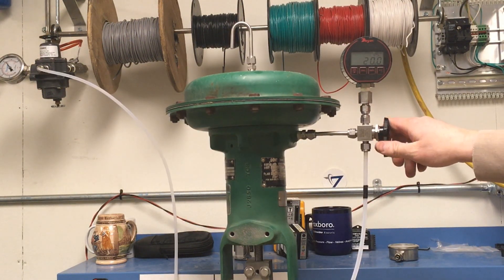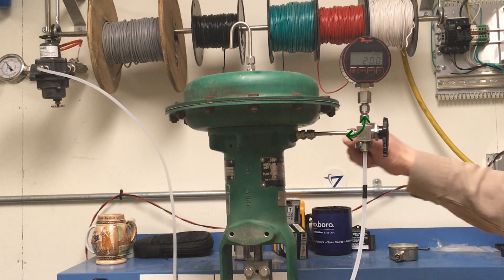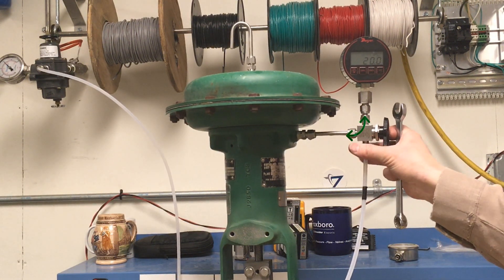Once the valve has reached its upper travel limit, rotate the handle of the three-way valve. This will connect the actuator to the pressure gauge, trapping the air.